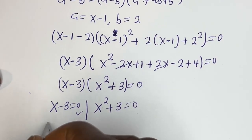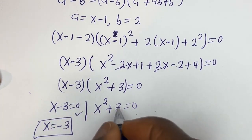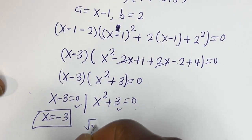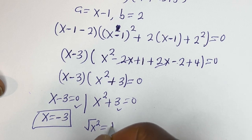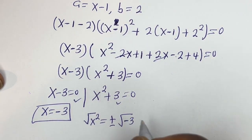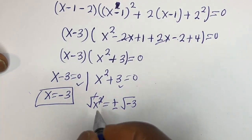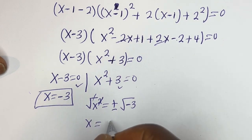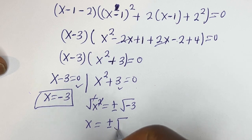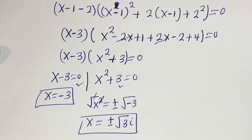From the first case, x minus 3 equals 0, so x equals 3. From the second case, x squared plus 3 equals 0. Taking the square root of both sides, x equals plus or minus square root of minus 3, which is x equals plus or minus i√3. These are also other values of x.